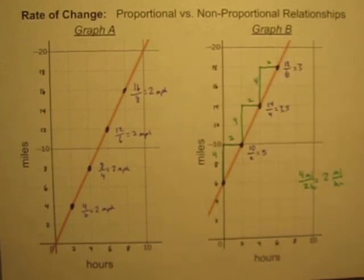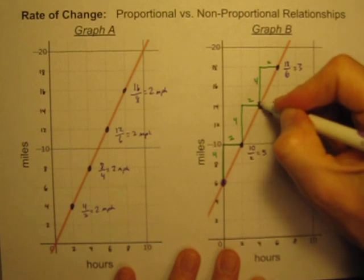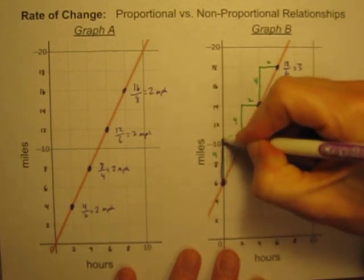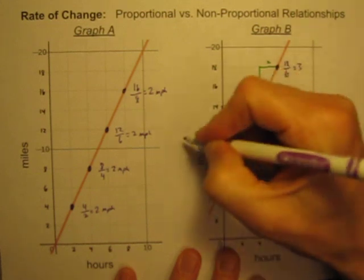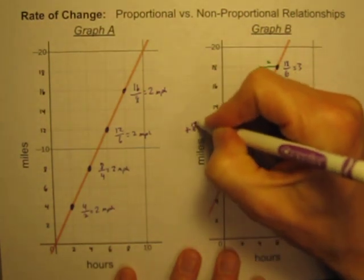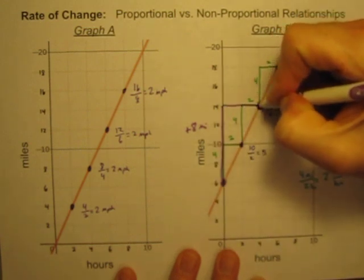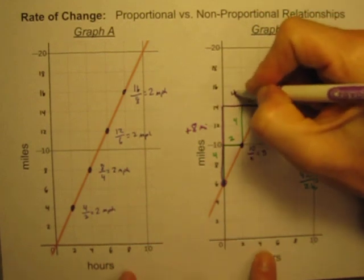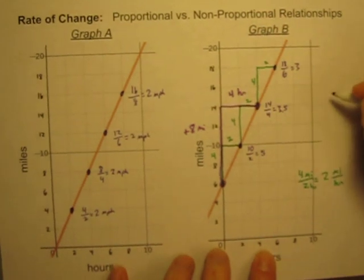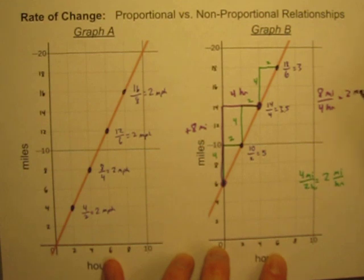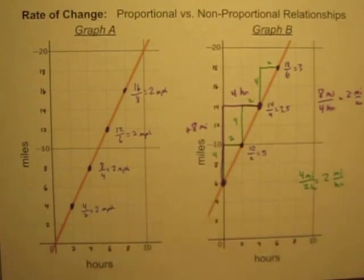If you picked points that weren't adjacent to one another, for example, if I went from this point to this point. I'm going from six miles to fourteen miles, which is an increase of eight miles. And I'm doing those eight miles in a time of zero to four hours. And eight miles divided by four hours is equal to two miles per hour.